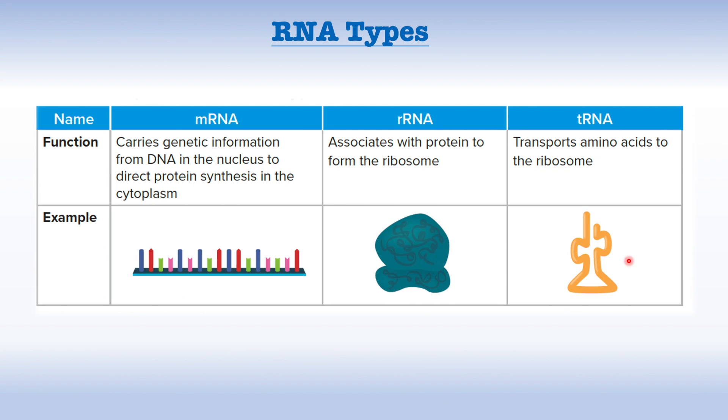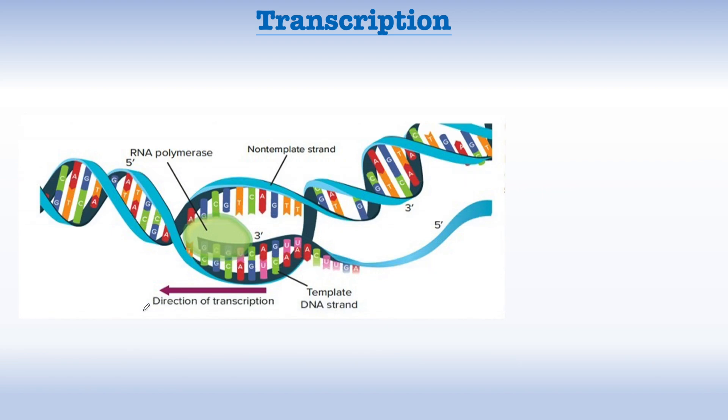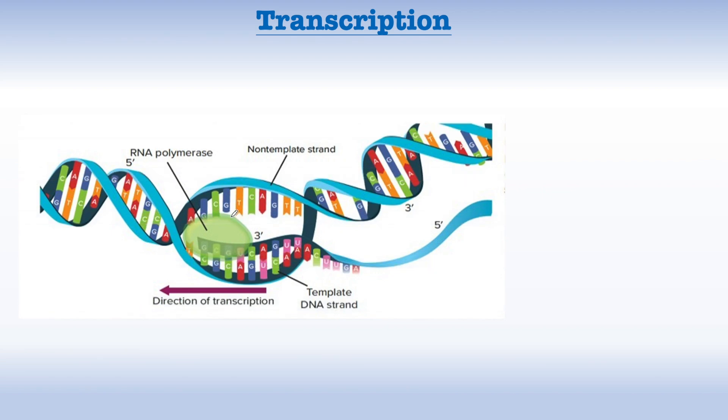Starting with transcription, which is the process where a cell makes an RNA copy of a segment of DNA. As it is clear here, this occurs in the nucleus of eukaryotic cells and in the cytoplasm of prokaryotic cells. Now, an enzyme called RNA polymerase binds to the DNA at a specific region we call promoter. It unwinds the DNA and uses one strand as template.